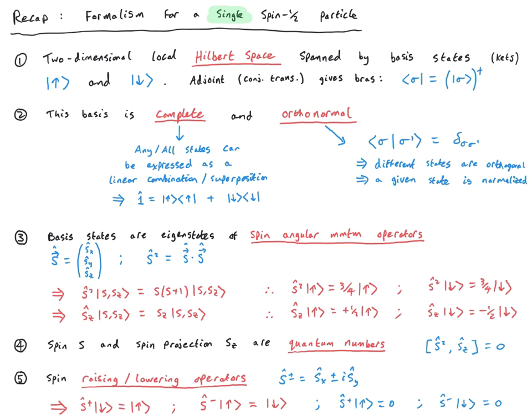When we say something is complete, it means that any and all states of our system can be described as linear combinations or superpositions of these basis states. More precisely, we can identify an identity operator one-hat, expressed in terms of bras and kets as the sum of the up projector plus the down projector. Any conceivable state acted on by this identity operator yields the same state back — this is referred to as the resolution of the identity.